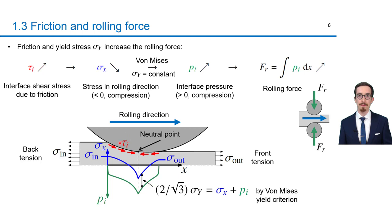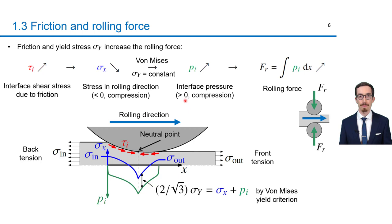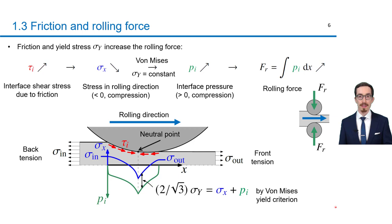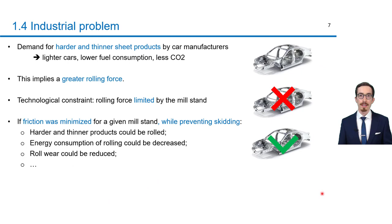The interface shear stress applied to the strip can be represented as shown in this figure. Initially, the rolling speed is greater than the strip speed, so the roll pushes the strip towards the neutral point where these speeds are equal. After the neutral point, the roll also pushes the strip towards the neutral point since its speed is lower than that of the strip. If the interface shear stress increases due to friction, the horizontal compression of the strip increases, implying that the vertical compression by the interface pressure must increase to plastically deform the strip. This equation is the simplified von Mises yield criterion in which sigma_y represents the yield stress. So if sigma_x decreases, the interface pressure pi must increase, which increases the rolling force. In short, friction and yield stress both increase the rolling force.